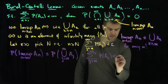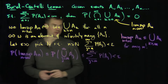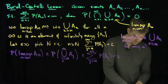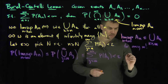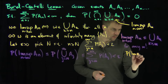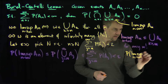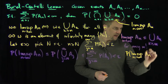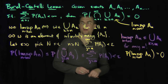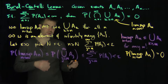And that is less than epsilon, for any epsilon. So in particular, the probability of the limsup is equal to zero. Hence, the probability of the limsup as n goes to infinity of AN is equal to zero. That's the first part of the Borel-Cantelli Lemma.